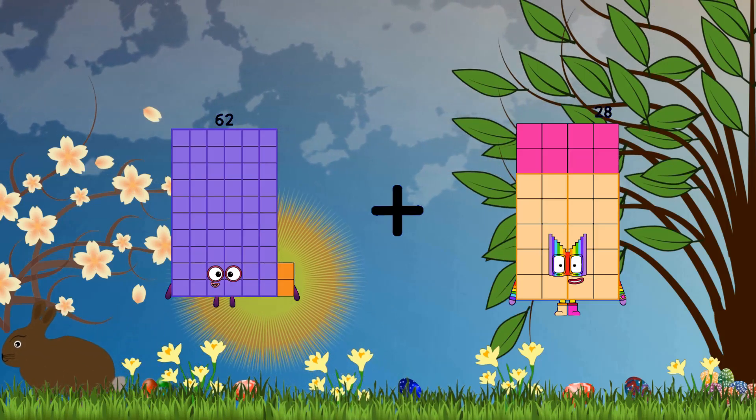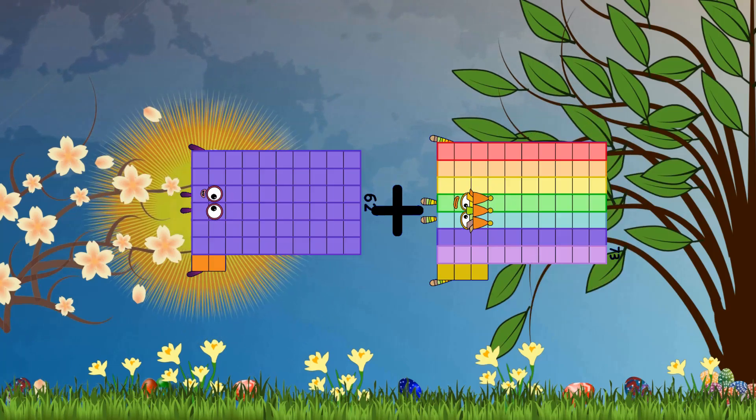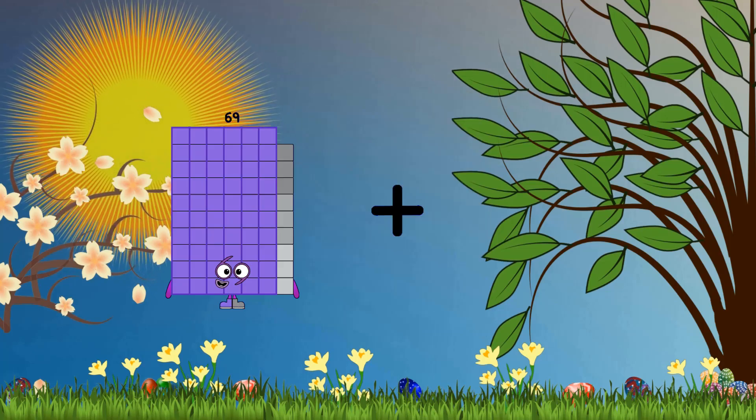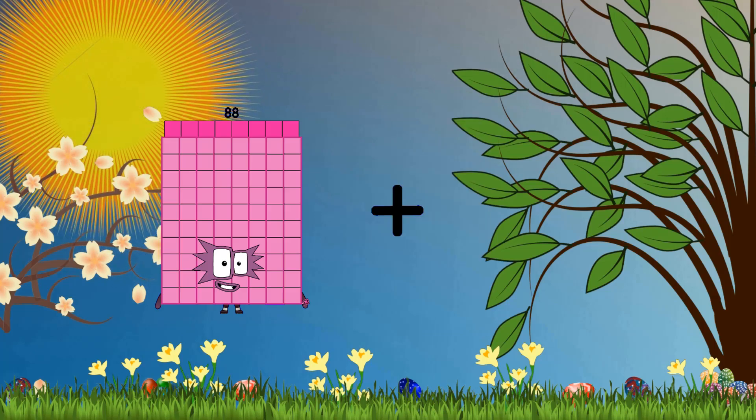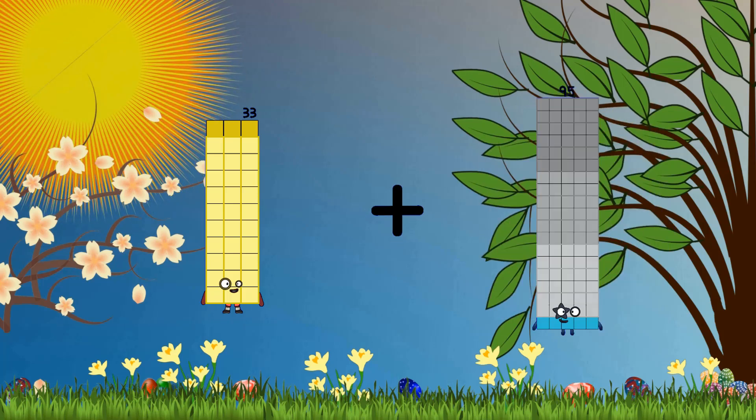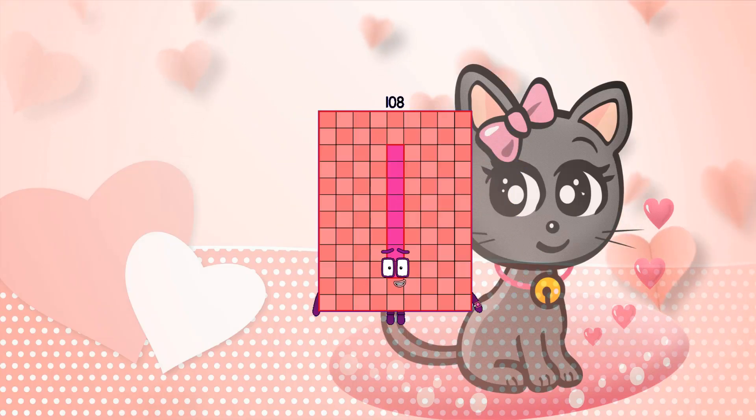Sixty-two plus seventy-three equals one hundred thirty-five. Thirty-three plus seventy-five equals one hundred eight.